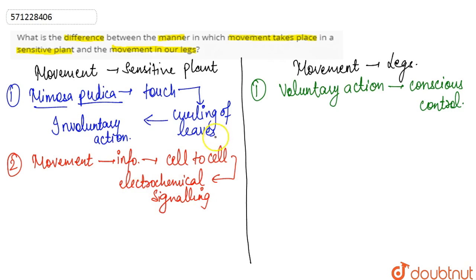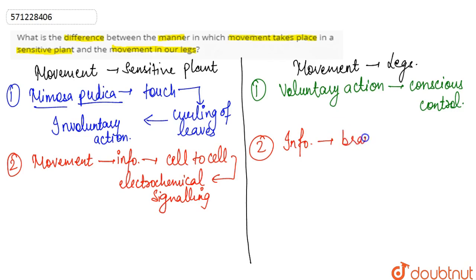In case of the movement in our legs, the signal or information is passed to the brain, where it is interpreted, and hence it is under our conscious control. Here, the nerve tissue — a specialized tissue present in humans — is responsible for carrying out the complete signaling and transmission of information.